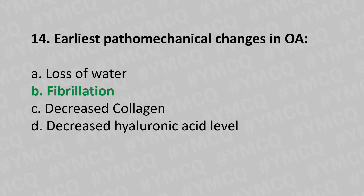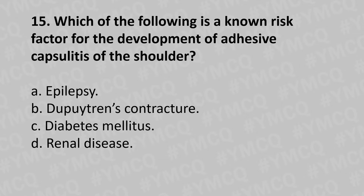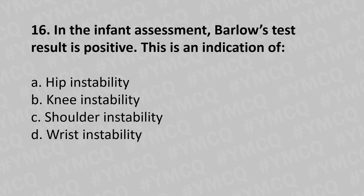Moving to our 15th question: which of the following is a known risk factor for development of adhesive capsulitis of the shoulder — option A epilepsy, option B Dupuytren's contracture, option C diabetes mellitus, option D renal disease. And the answer is option C diabetes mellitus.